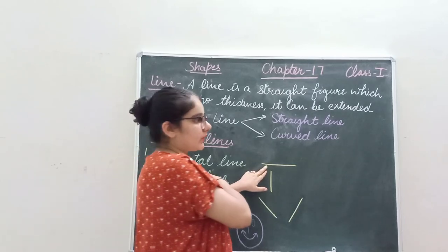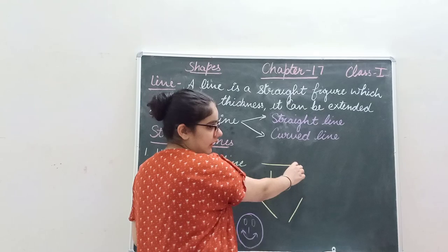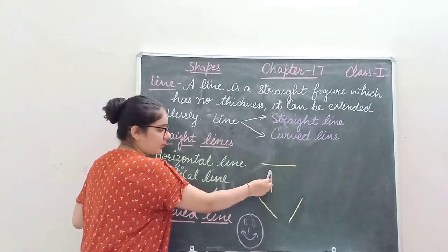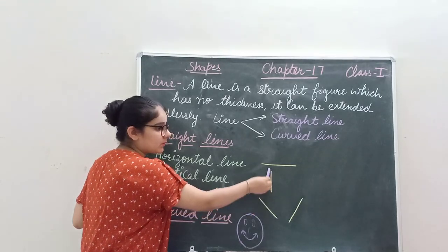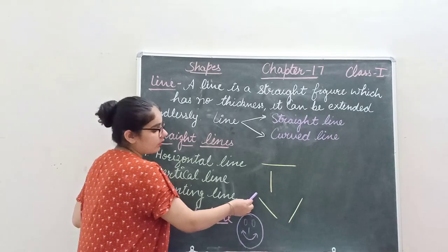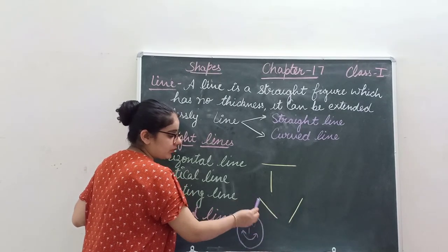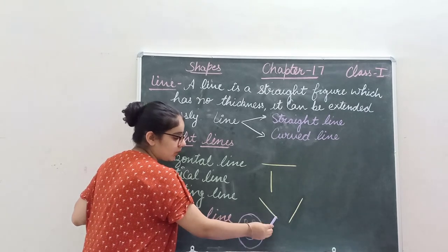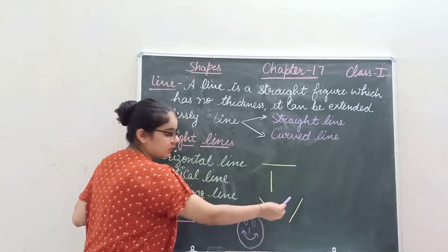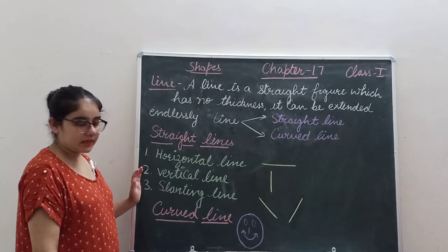From left to right. This is a horizontal line. Vertical line is drawn from top to bottom or bottom to top. Slanting line, from this point to this, or we can say from left to right downward or upward from left to right. So these are straight lines.